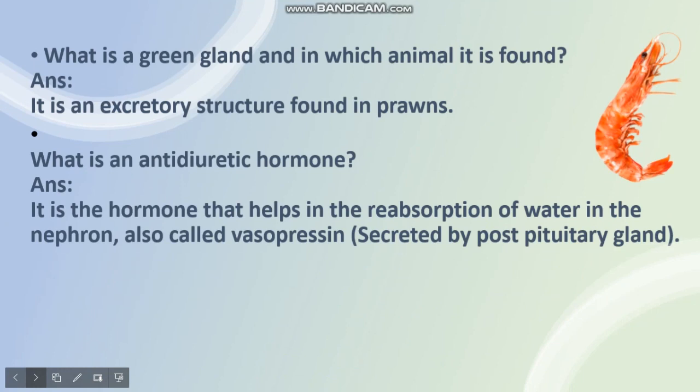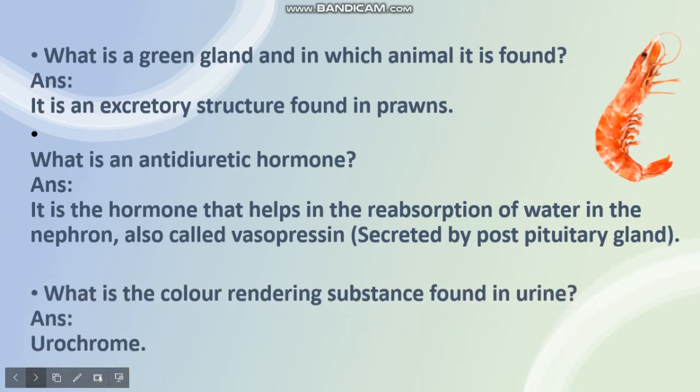What is an antidiuretic hormone? The answer is it is the hormone that helps in the reabsorption of water in the nephron, also called vasopressin, secreted by the posterior pituitary gland. What is the color-rendering substance found in urine? The answer is urochrome.